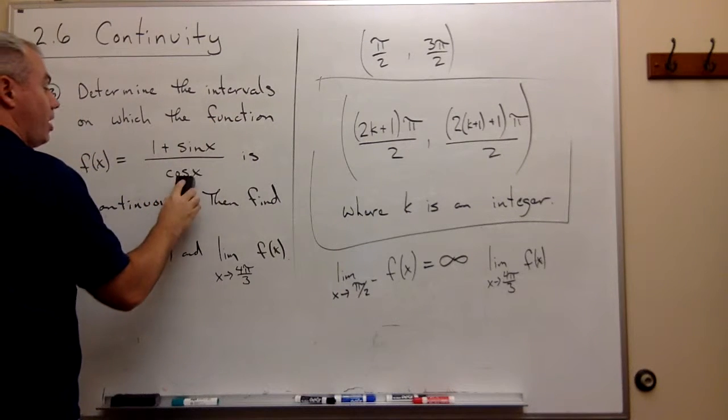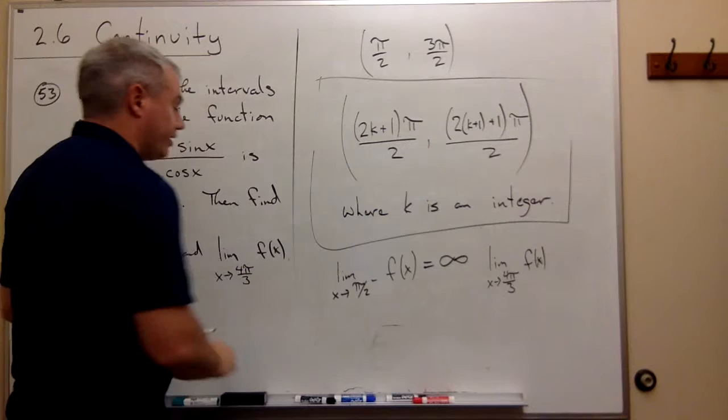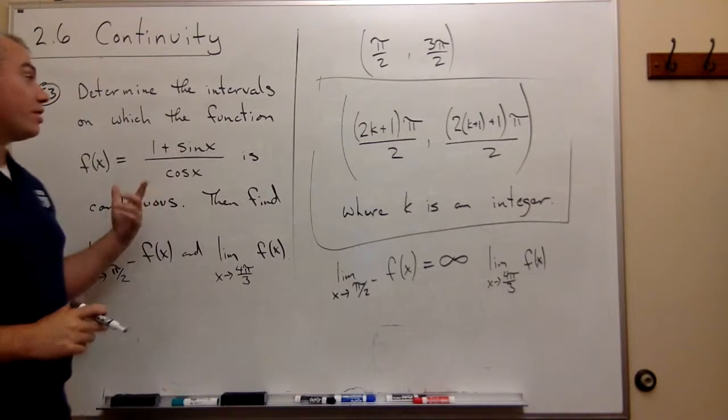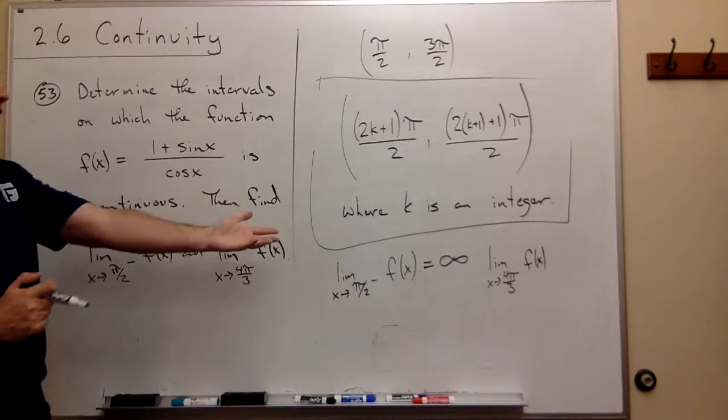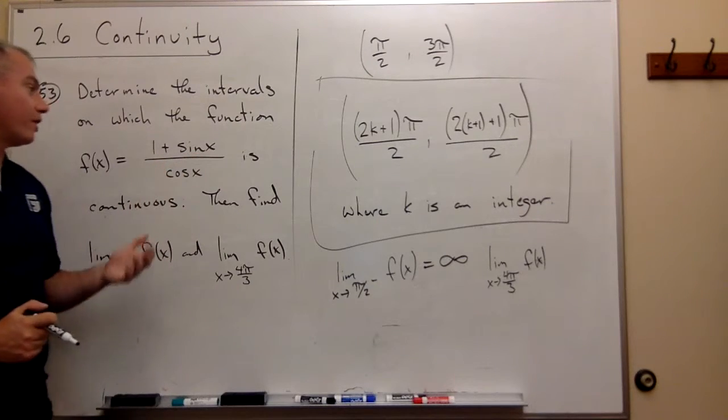It doesn't make the bottom zero if I plug in 4 pi over 3. And since it doesn't make the bottom zero, I can just go ahead and plug in 4 pi over 3 and get my answer straight out of the function.